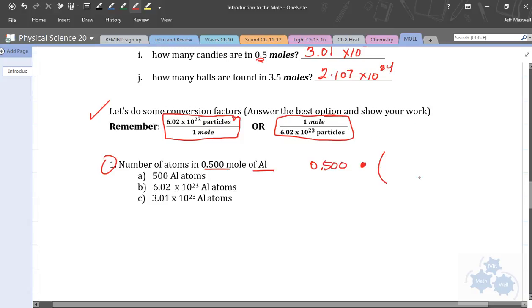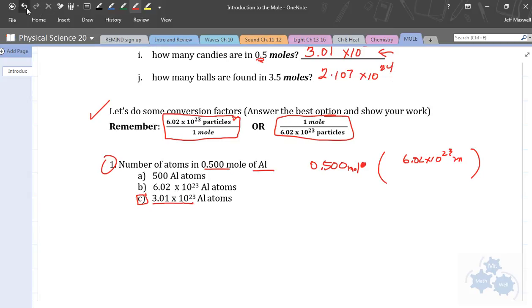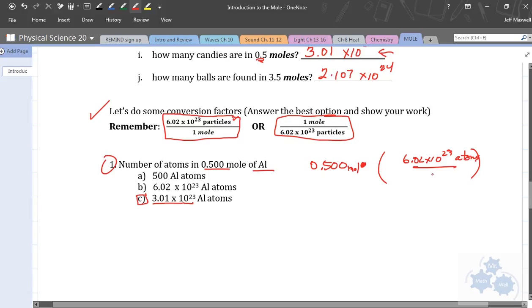For example, number one, the number of atoms in 0.5 moles of aluminum. So, 0.5 moles. Well, we know that 0.5 moles, we know what that number is already, but how could we use this conversion factor? You should see already that C. Because we just did a question up here. 0.5 moles, 3.01 to 10 to the 23. But, what would I multiply by to get that number? Which conversion factor? Would it be this one? 6.02 times 10 to the 23 atoms over 1 mole. Yeah, that's the one we would use. Exactly. Do 0.5 times this divided by 1.